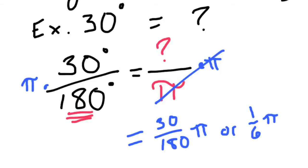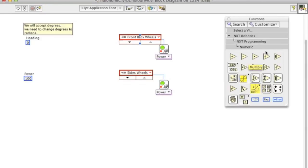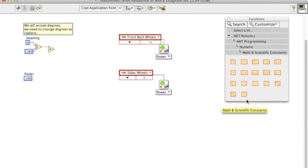So the process is going to be the same when we program it. So we need to divide the heading by 180 and then multiply by pi. And we even have a constant built in the LabVIEW for pi.